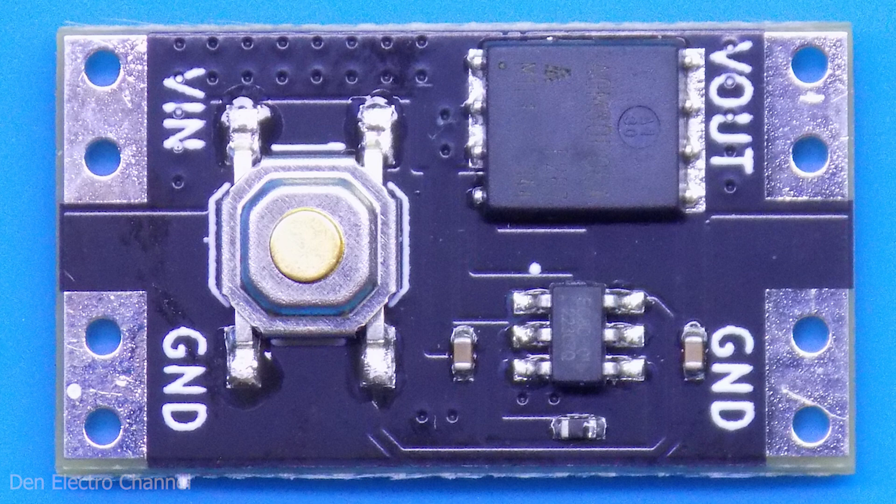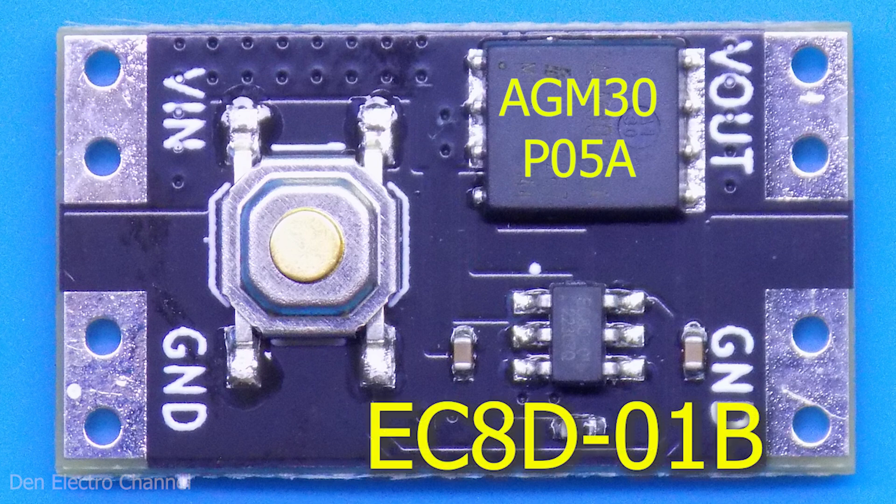There are few parts on the low voltage module. A button, capacitors, a 75 ampere field effect transistor and just below a small six-legged microcircuit. It is she who controls the entire module.